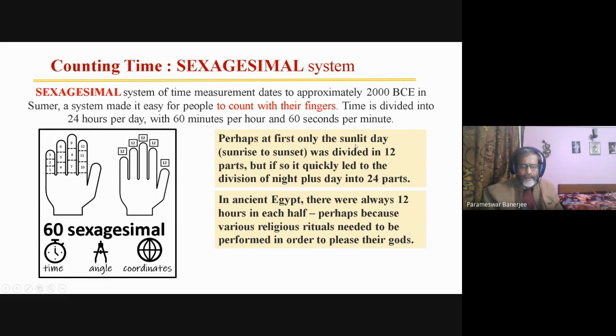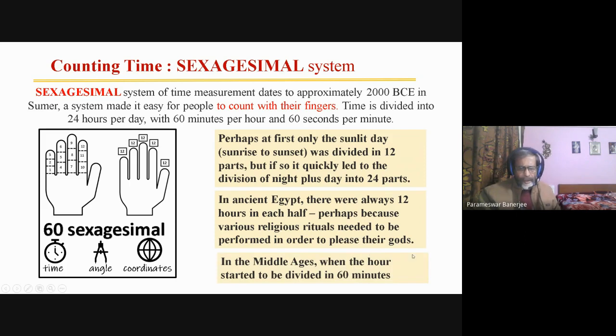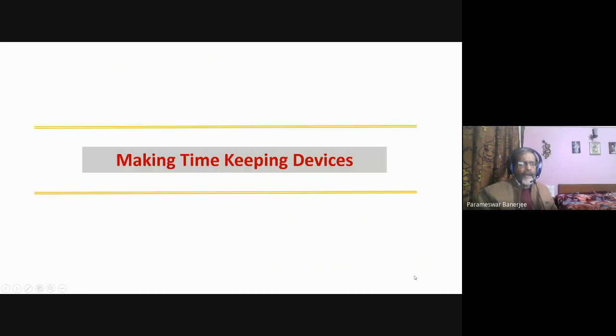Perhaps, at the first time, when sundial started, though it was twenty-four, sixty, then they divided twelve parts in the day and the night. That makes twenty-four hours in one day. And, in ancient Egypt, there were always twelve hours in each half. Perhaps, because, really, they had another thing you must note, many things were dictated by religious performance and religious rituals. Rituals needed to perform in order to please their gods. Because, many things were uncertain. In the middle age, when hours started, it began to be divided into sixty minutes. Now, making the timekeeping device.